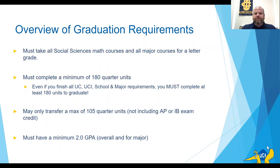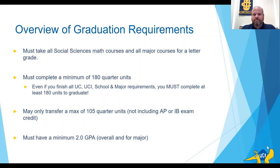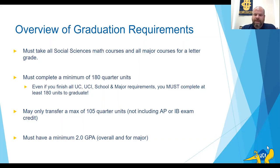All students have to have a minimum of 180 quarter units in order to graduate — this is the same for all majors across campus. So if you complete your sociology major requirements but find you're a little short of 180 quarter units, you may need to take additional units to reach that mark. That could be through a minor, a double major, or some elective units that we'll be talking about as well.